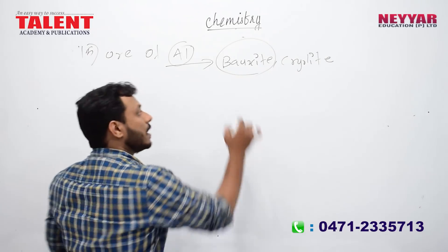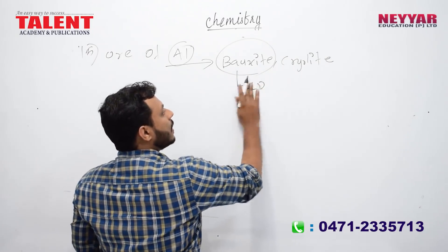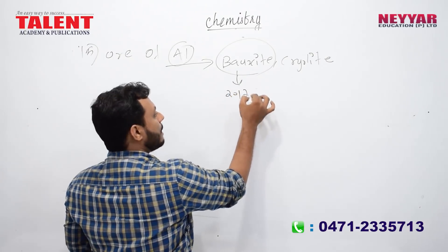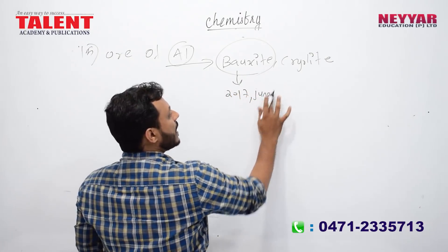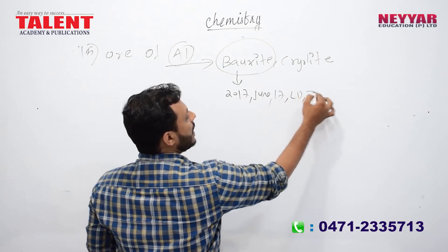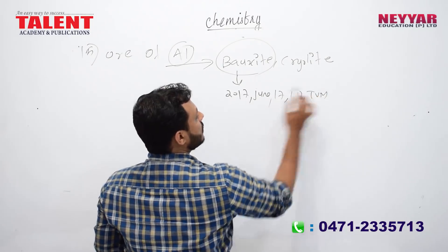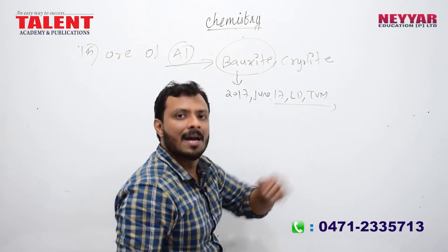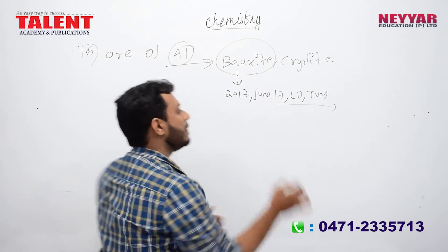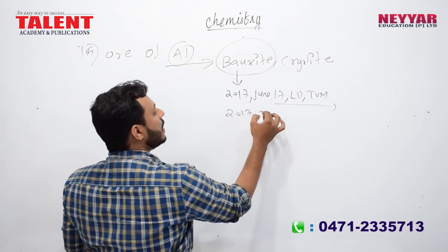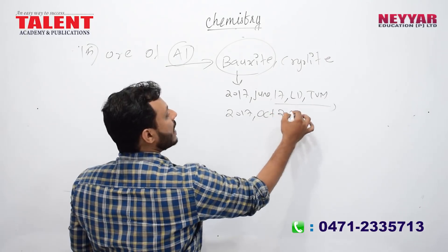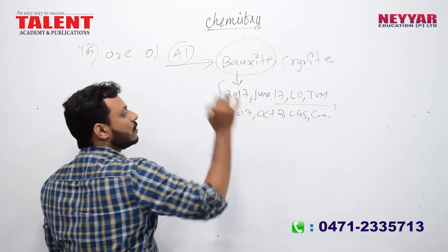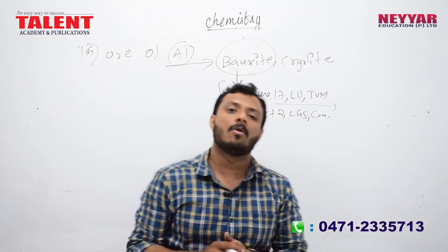Let's talk about two exam questions. One appeared in June 2018 in Trivandrum. The ore of aluminum is bauxite. This same question was repeated in October by the LGS company — the ore of aluminum is bauxite.